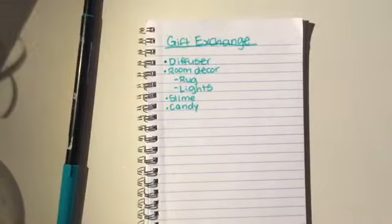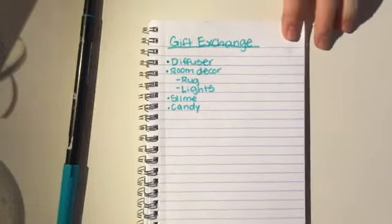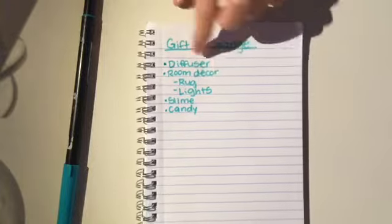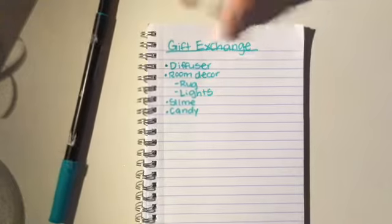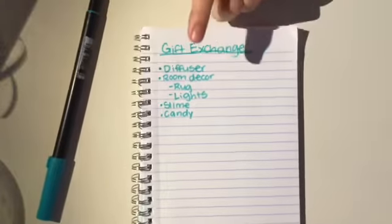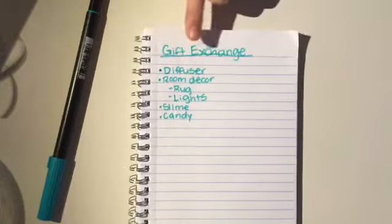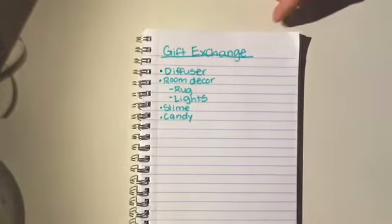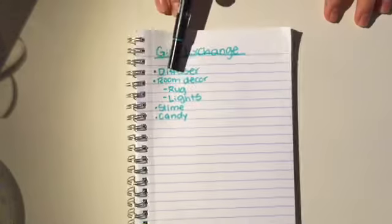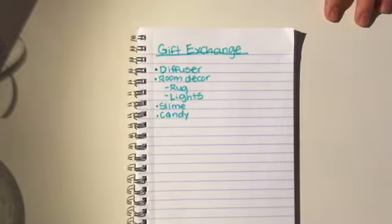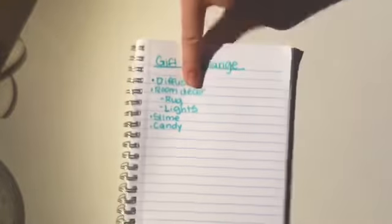So I think this is the majority of stuff I'm gonna buy her. I know it's not that much, but I could add to the list later. The thing I'm probably most positive I'm gonna get is the diffuser and rug. If they're out of stock, I'll probably just plan to get her something else. Now I'm gonna show you guys what I have made her so far.